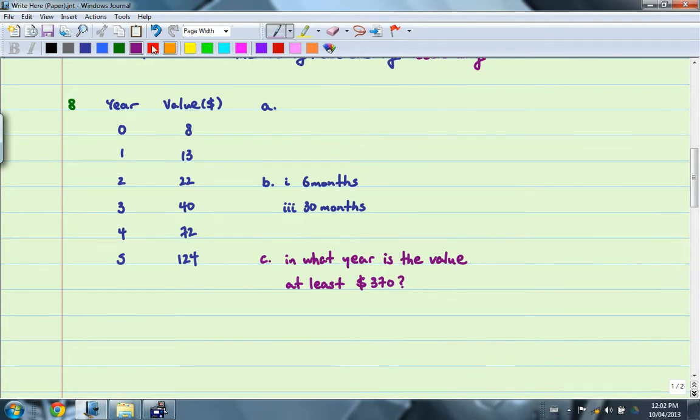So the first thing we need to do is to determine the equation of exponential regression to model the situation. And then we'll find the approximate value of the card after 6 months and 30 months. So that's part B, 1 and 3. And finally, I just threw in this bonus part here, C. In what year is the value at least $370, that is when you're given the y value and you want to find the x value. So we're going to try that as well.